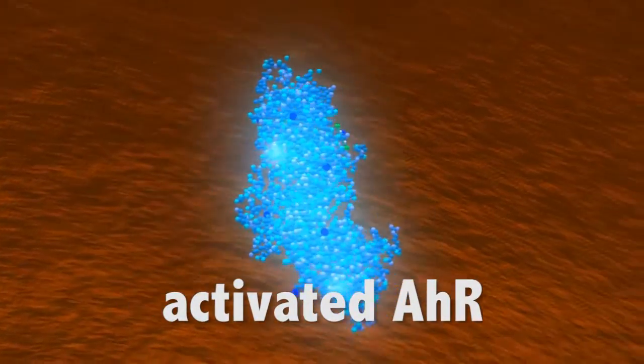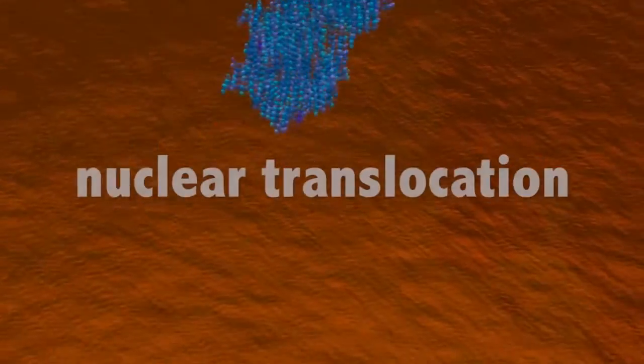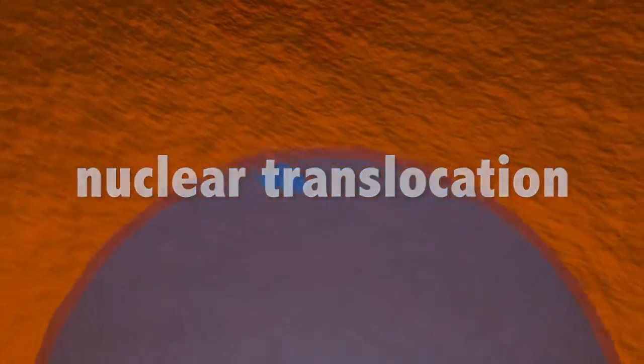AHR activation is achieved by ligand binding to the PAS-B domain of the AHR. This results in nuclear translocation of the AHR where its partner protein,